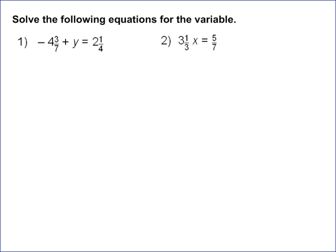Because in this case, I've got negative 4 and 3 sevenths plus y, so I have to get y by itself, so I can very easily do that by adding 4 and 3 over 7. Over here, I have to do the exact same thing.